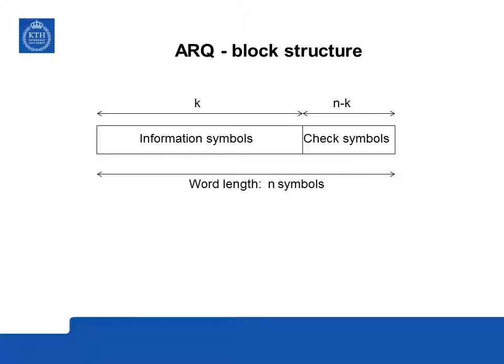Such a block code has two performance measures. First is the code rate, or relative code rate: the number of information symbols divided by the total number of symbols. A code rate equal to one means there are only information symbols; as we add more check symbols the code rate falls below one. It measures how much time we spend on information symbols compared to the total symbols transmitted, so we want a code rate close to one.